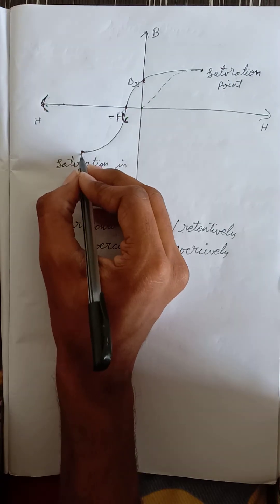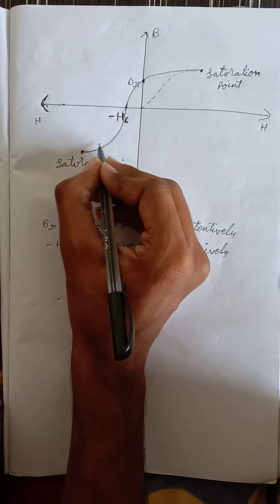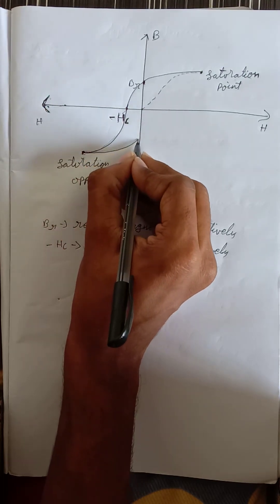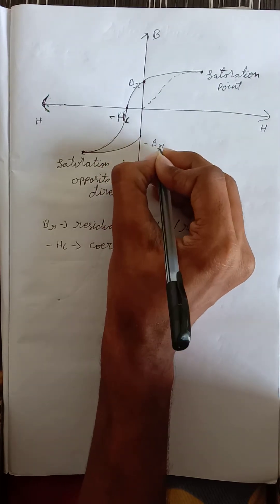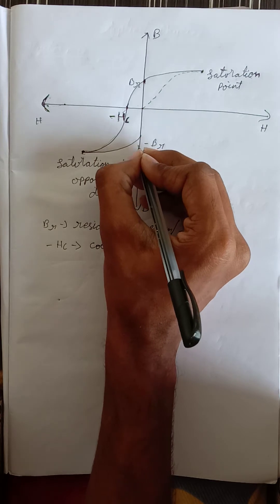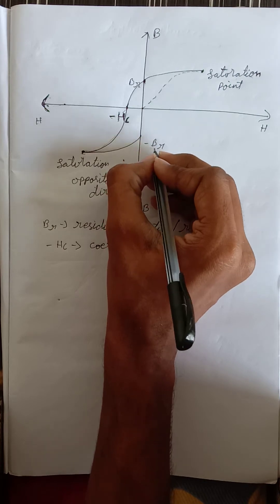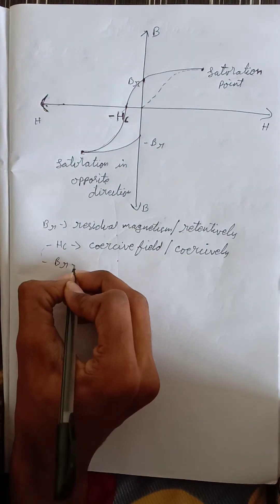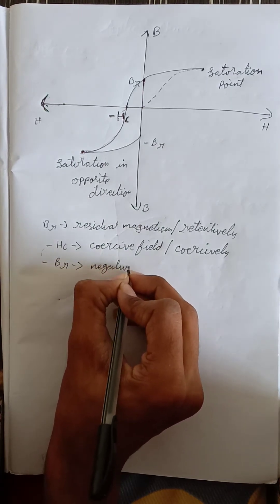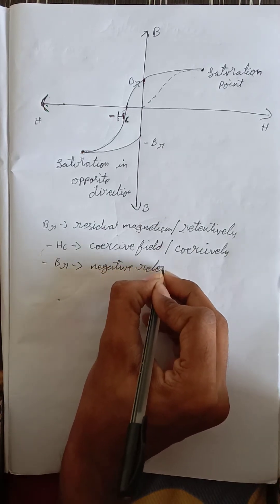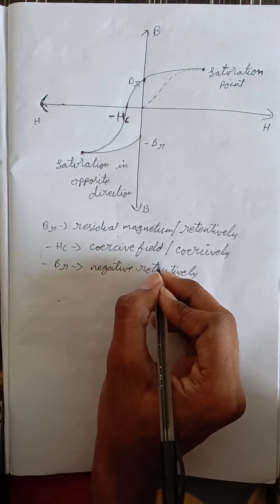When we remove the negative magnetic field to zero, the material does not travel back on the same path; it creates a new path and reaches a point on the B coordinate. This point is called minus BR, as it is on the negative B axis, and it is called negative retentivity.